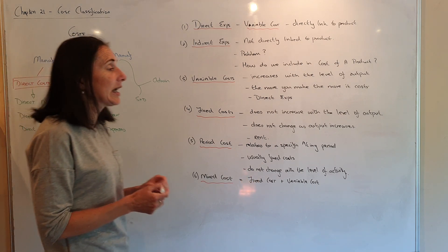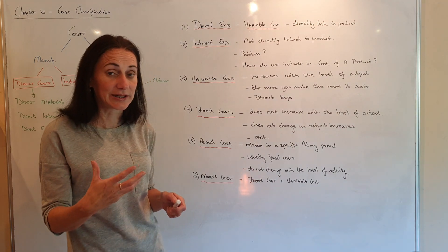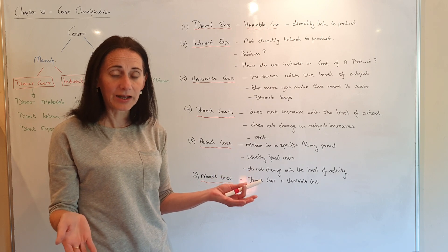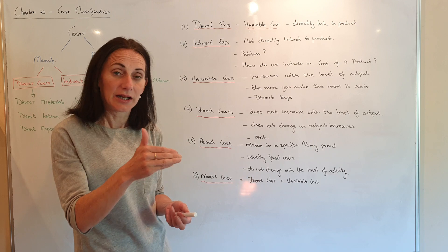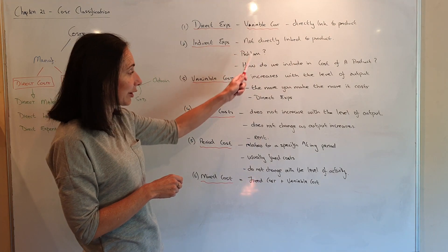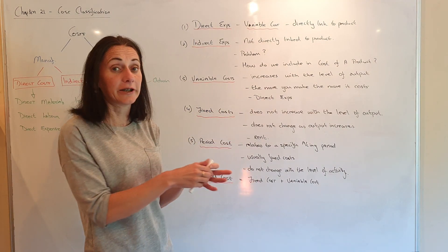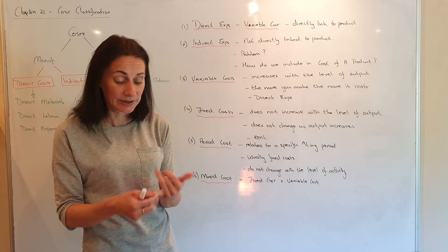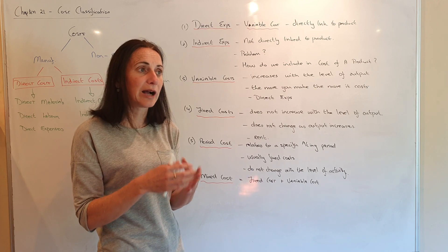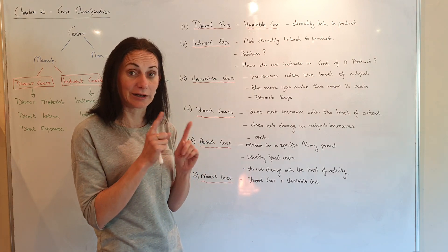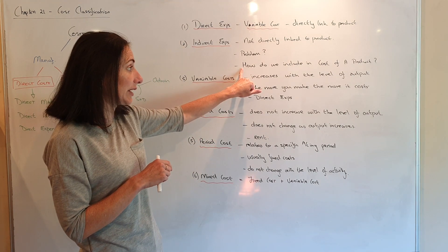Indirect expenses are not directly linked to a product. For example, if we say to make tables we need to rent a factory, I can't tell you how much rent is for each unit. So the problem is it's not directly linked to a product. If I want to cost a product — a particular table — I know how much materials went into it, I know how much labour went into it, I know how much royalty I have to pay, but I don't know how much of the ESB bill is specifically due to that one unit. So we're going to have to look at how do we include that in the cost of the product.